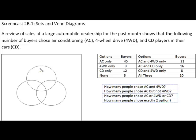For our purposes I am going to work clockwise and label the first circle AC for air conditioning, the second circle four-wheel drive, and then CD player — I'm just going to put CD at the bottom of the circle over here.